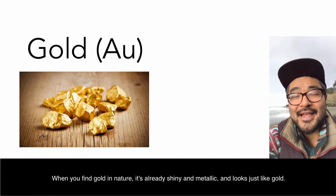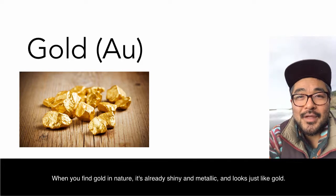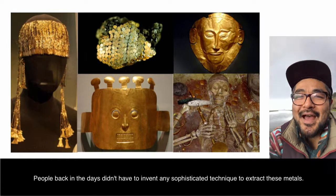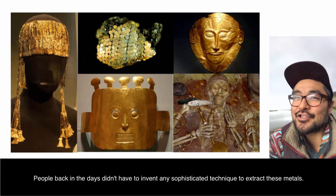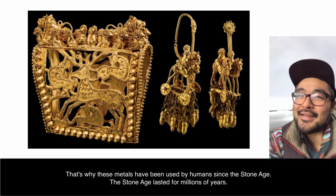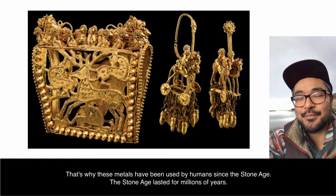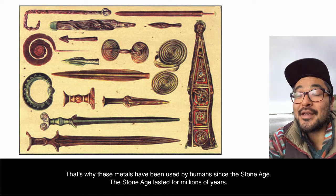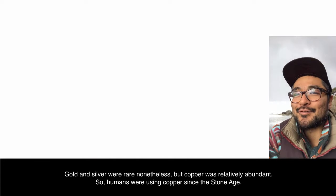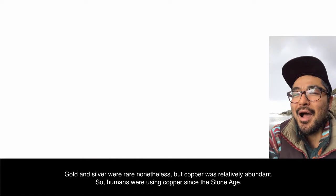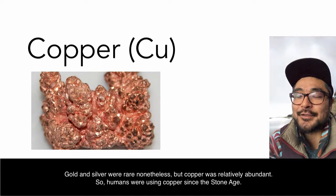When you find gold in nature, it's already shiny and metallic and looks just like gold. People back in the days didn't have to invent any sophisticated technique to extract these metals. That's why they've been used by humans since the Stone Age, which lasted for millions of years. Gold and silver were rare, but copper was relatively abundant, so humans were using copper since the Stone Age.